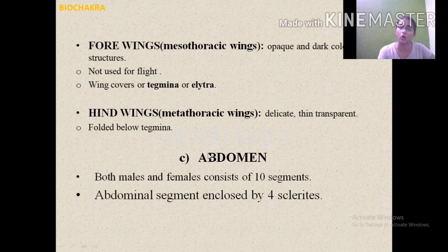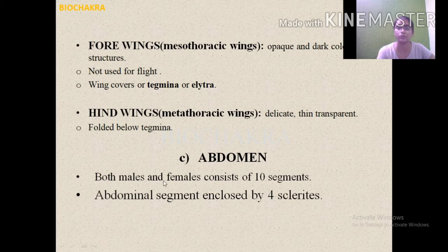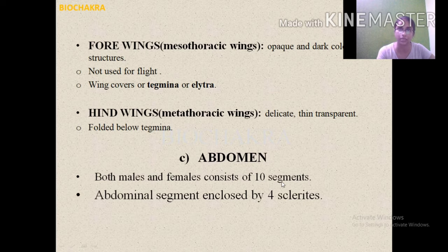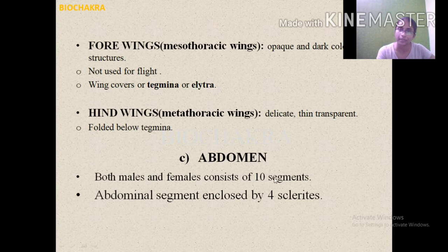The third body division is the abdomen, which is the posterior region of the cockroach. In both males and females, the abdomen consists of 10 segments in the adult. In the embryo stage, the abdomen consists of 11 segments in both male and female. The abdominal segments are enclosed by 4 sclerites.